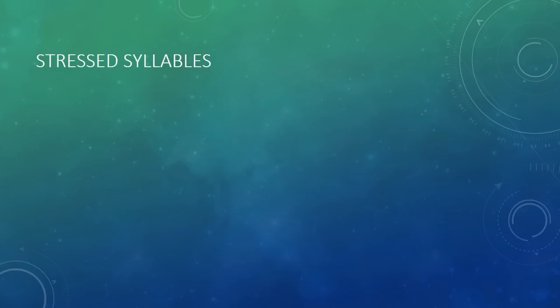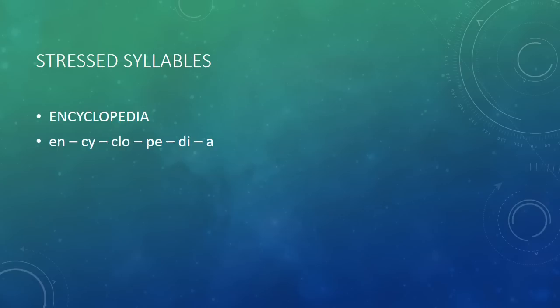Okay, stressed syllables. Do you know what a stressed syllable is? It's something that we have in English and in Spanish and other languages as well. Basically, when we speak, one syllable in each word gets stressed. The stressed syllable is the one that we say more strongly than the other syllables. For example, let's take the word encyclopedia. How many syllables does that have? Encyclopedia — it has six syllables, and one of those syllables gets stressed when we speak.